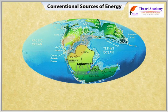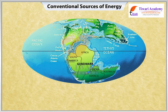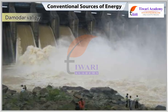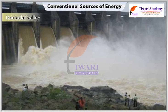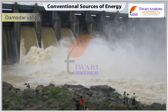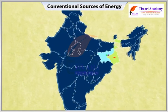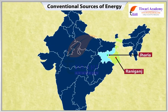Coal deposits in India are of two distinct geological ages: Gondwana, a little over 200 million years in age, and deposits of tertiary age, about 55 million years old. The major resources of Gondwana coal, which are metallurgical coal, are located in the Damodar Valley. Other important coal fields are Jharia, Raniganj, and Bokaro.